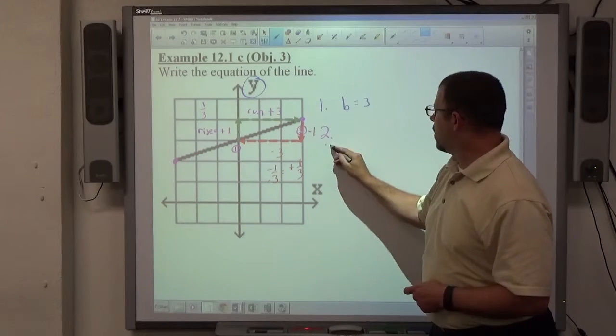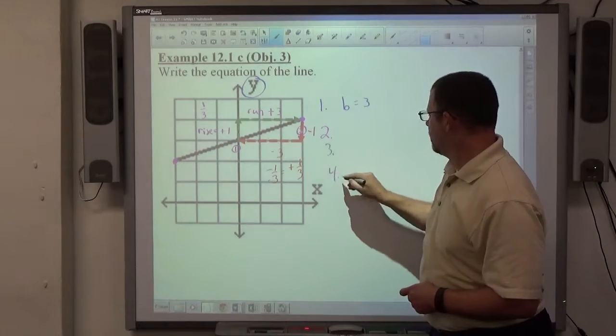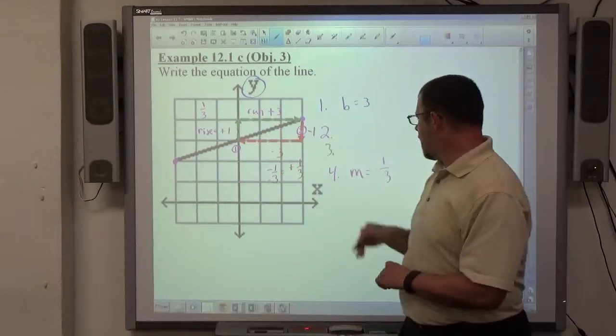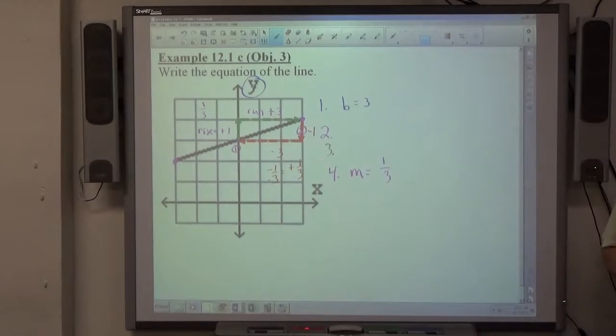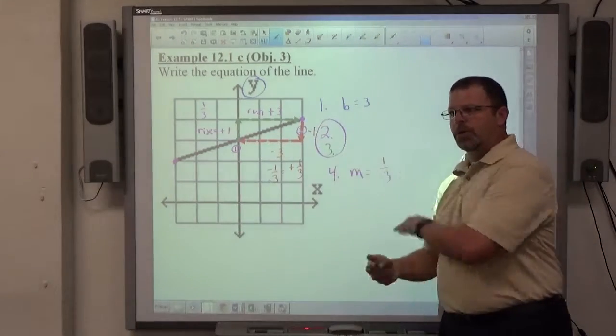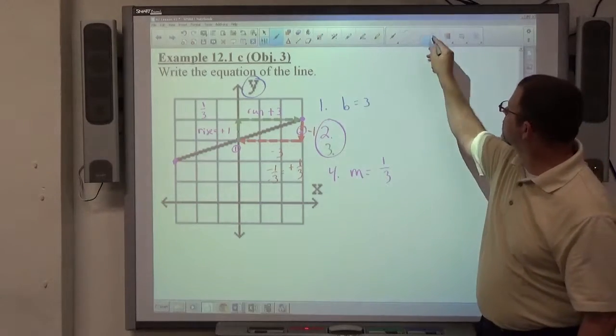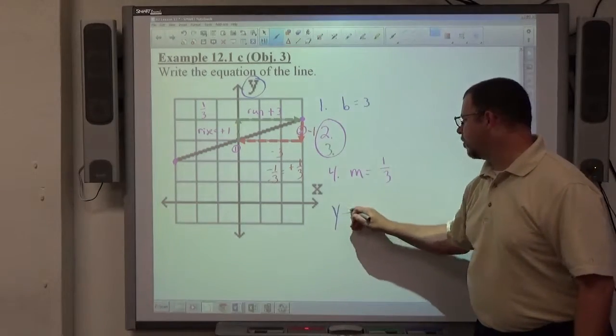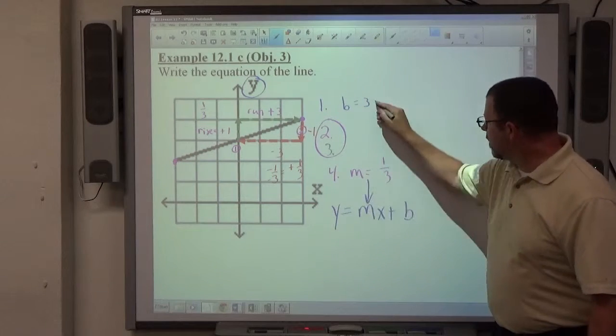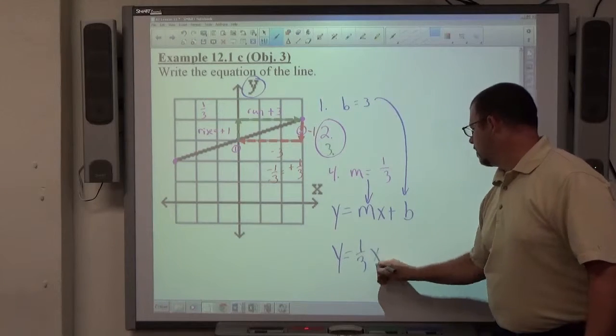Step four is to write your answer, m equals one-third, positive one over positive three. So steps two and three are done on the graph paper itself. Step four is done by writing that down. Once we've done steps one and four, our final answer, y equals mx plus b, is the structure. m goes there, b goes there. So the answer is y equals one-third x plus three.